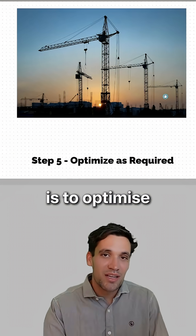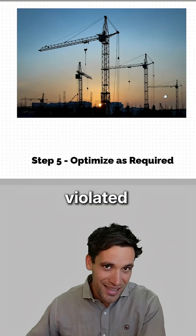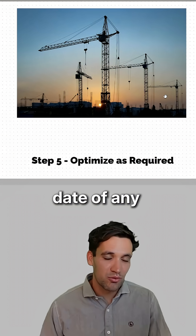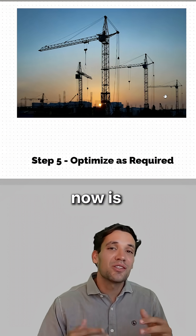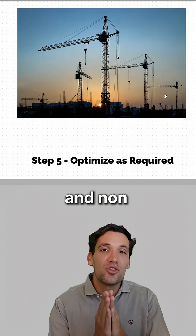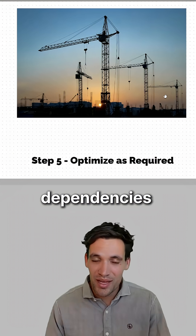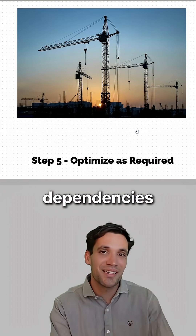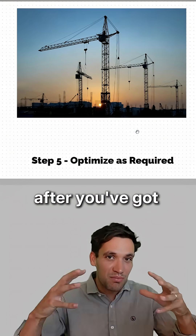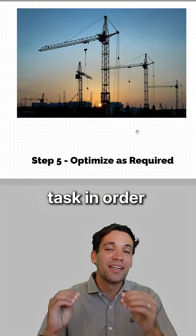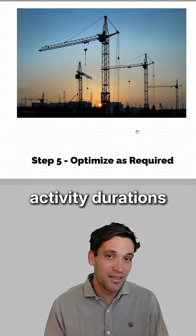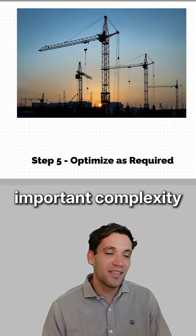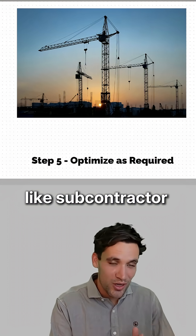The final step is to optimize. If you've violated any constraints — like the finish date of the project or the finish date of any separable portions — now is when you can play with resourcing and non-mandatory dependencies to save money. But always add optional dependencies after you've got the big picture correct: tasks in order and reasonable activity durations.